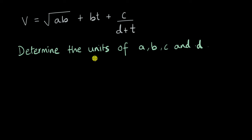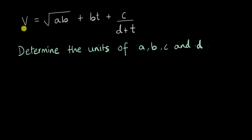Before I go ahead, why don't you pause the video and give this one a try. Alright. Now we know that physical quantities can be added or subtracted only if they have the same dimensions. So if you have velocity on the left hand side and three quantities being added, they must have the same units as that of velocity.